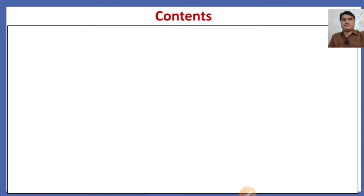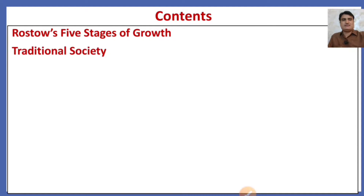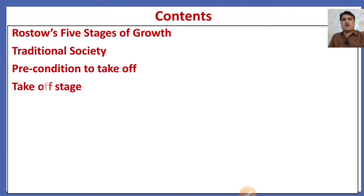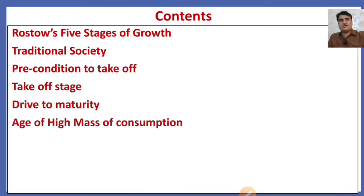In this lecture, we shall discuss Rostow's five stages of growth: number one, traditional society; precondition to takeoff; takeoff stage; drive to maturity; and age of high mass consumption. We will also look at the criticism that has been made on Rostow's five stages of growth.